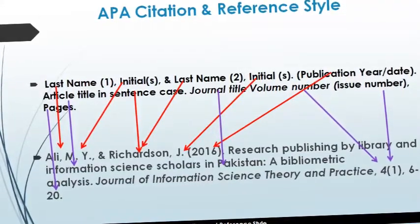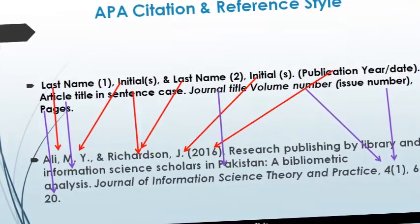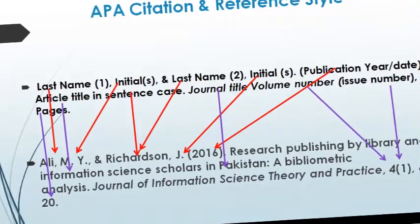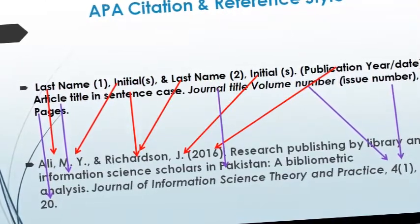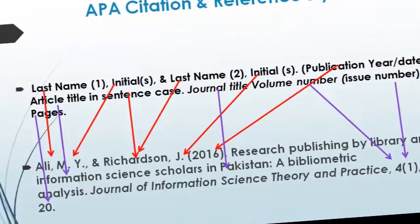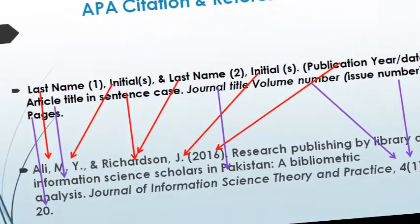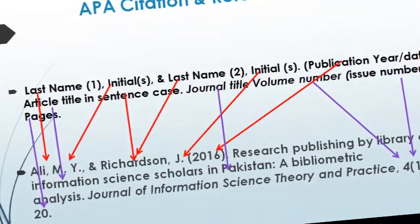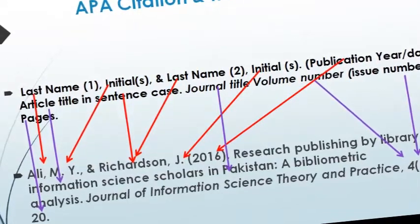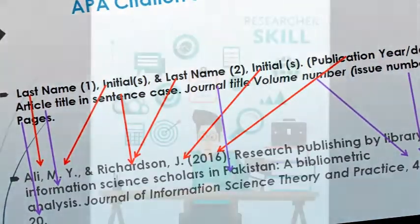Then the year of publication, followed by the title of the article in sentence case. The journal title and volume number should be written in italic font, the issue number in normal font, and then the pages. If the journal is published in online format, we can mention the DOI number or its website.